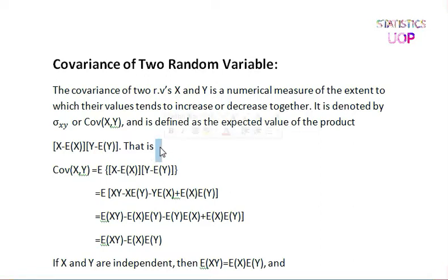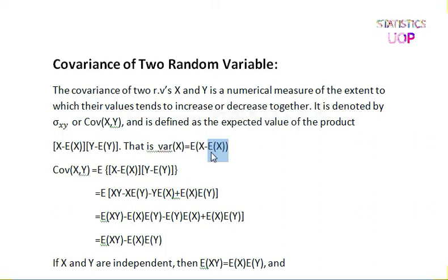When we talk about the variance of X, the mean of X is X-bar. This is the variance of X — it involves only one variable, that is X. Here we have one variable, and in that situation we have the variance formula.